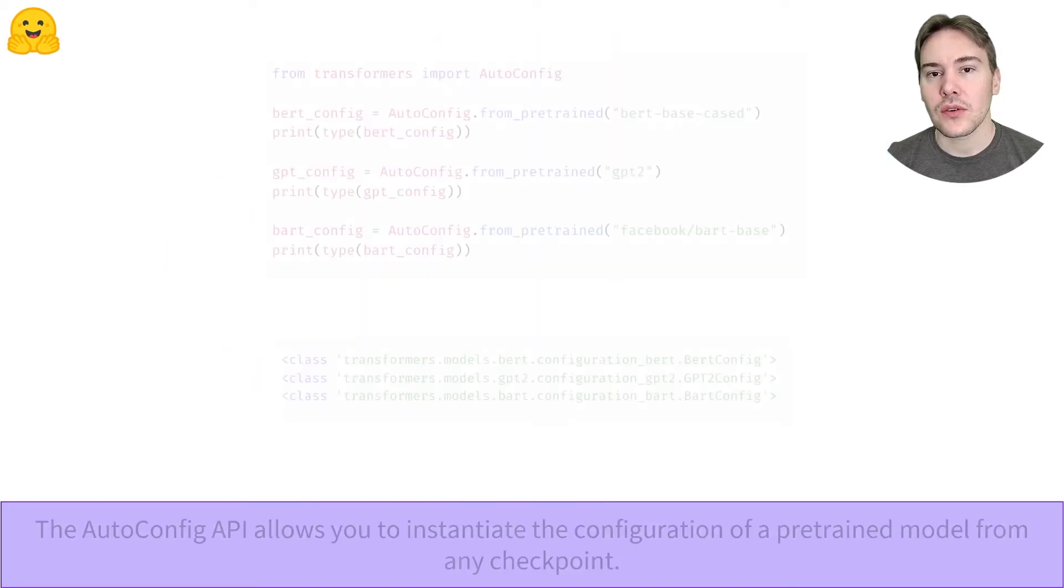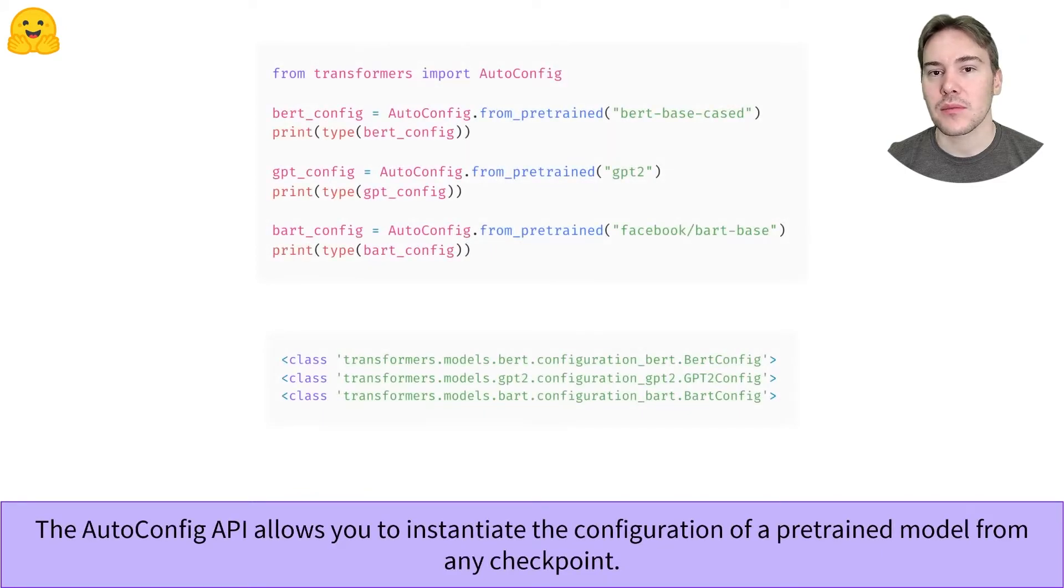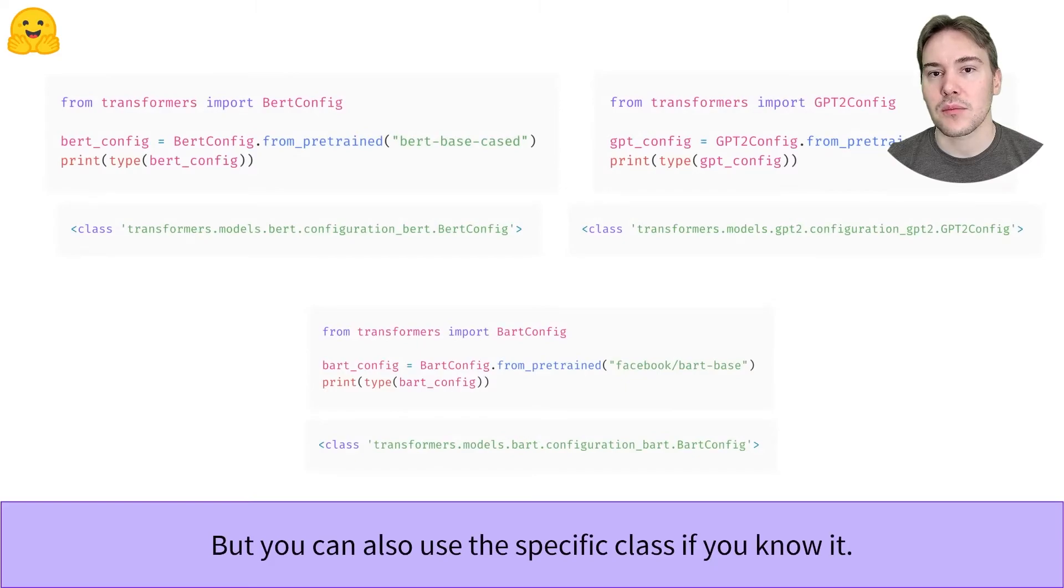To easily load the configuration of a model from any checkpoint or a folder containing the configuration file, we can use the AutoConfig class. Like the TFAutoModel class, it will pick the right configuration class from the library. We can also use the specific class corresponding to a checkpoint, but we will need to change the code each time we want to try a different model architecture.